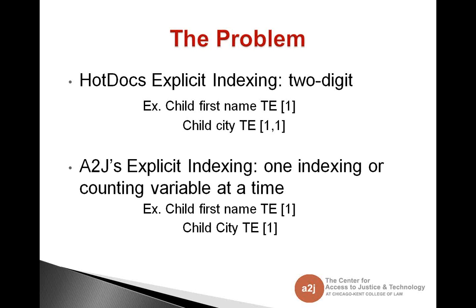Here's the problem. Hot Docs tracks answers in a nested repeat dialogue with two-level explicit indexing — for example, child first name TE as the outer loop and child city TE as the inner loop, indexed as 1 comma 1. However, A to J Author only tracks with one counting variable at a time. So the outer loop is child first name TE index 1, and the inner loop is also just 1, even though they are separate counting variables. A to J can create a unique index variable for each answer in the inner loop, and that index variable can be used by Hot Docs to simulate the two-digit explicit indexing.